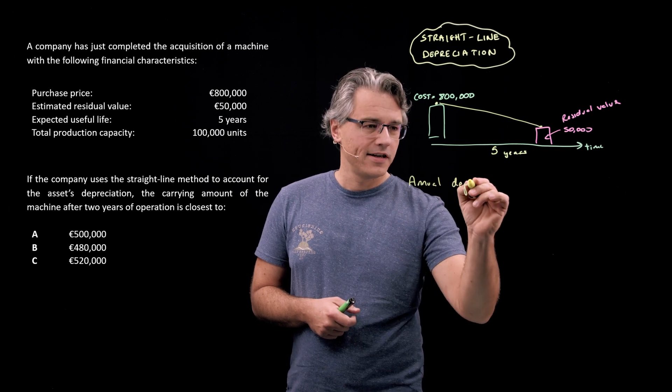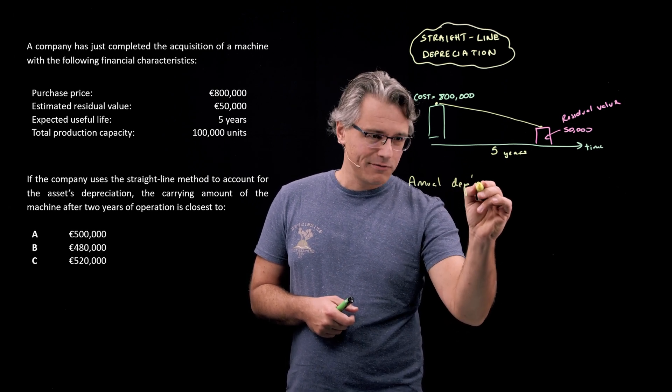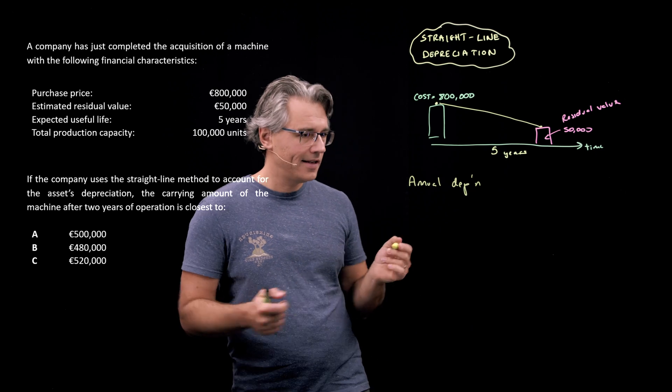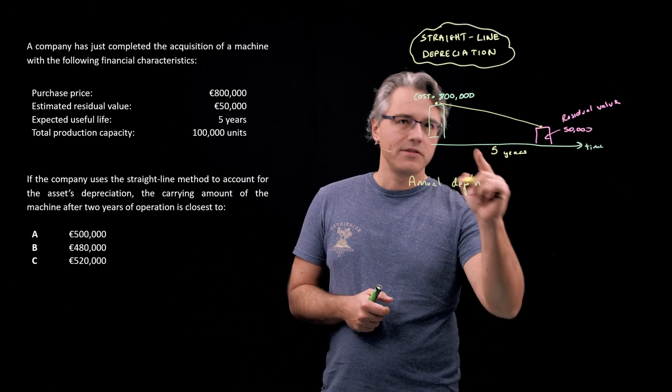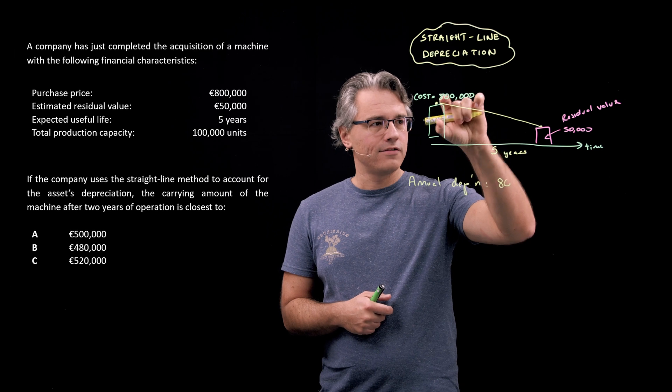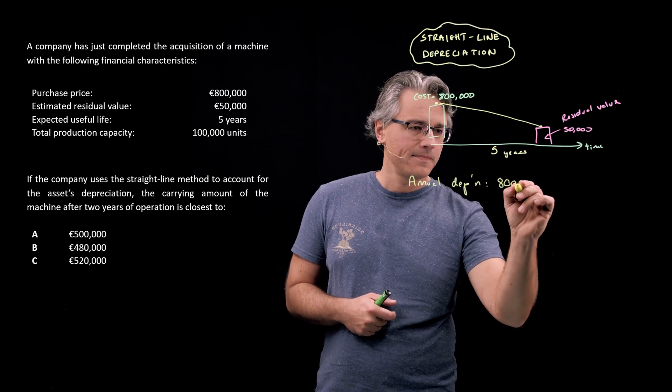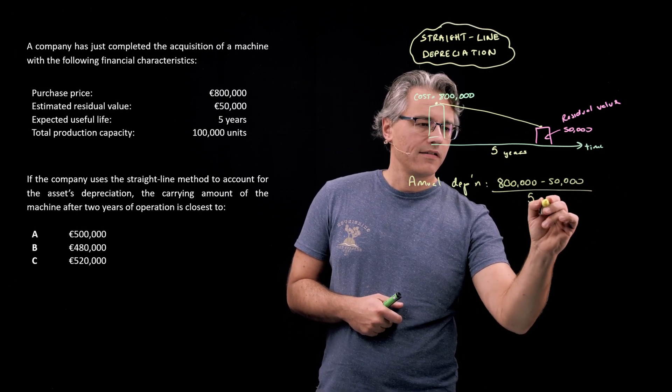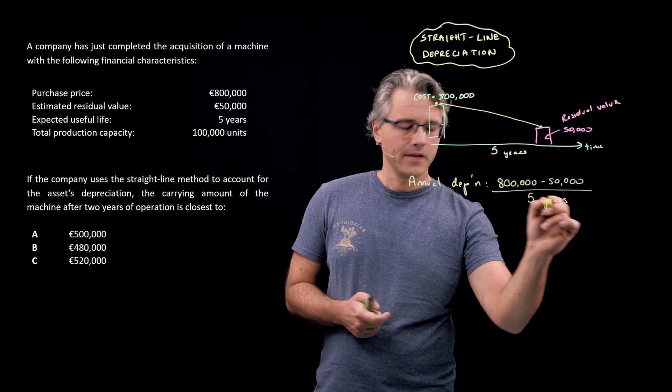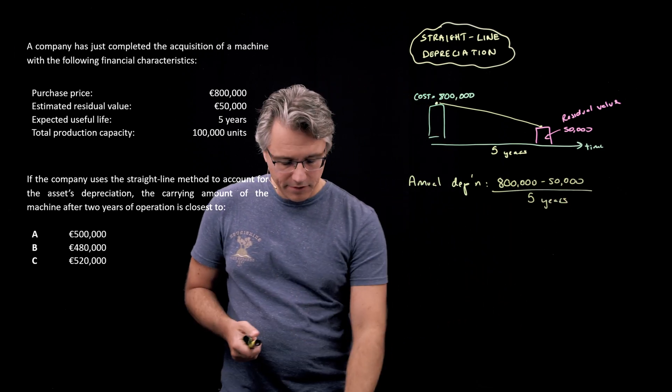And I just want you to be aware that in order to calculate this, actually you can figure this out yourself, the annual depreciation - let me write depreciation shorthand for this - would be DEP'n, as in depreciation, would be to take this distance from 800,000 to 50,000 and spread it over the five year period.